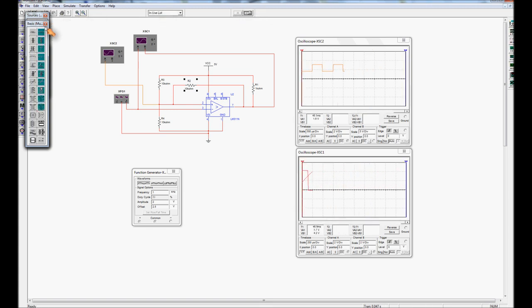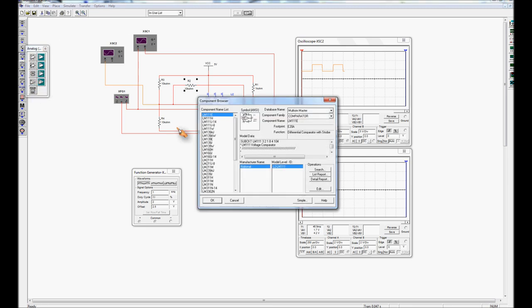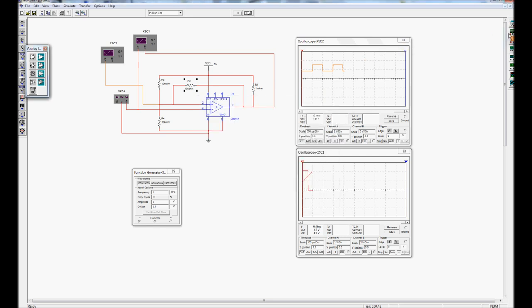Very quick. If you wanted to build this in multi-sim, components are all fairly easy to get. You go to the analog section here, comparator, and you can find the LM311 down there. Function generator can be found over here. Oscilloscopes can be found there. And power supply VCC and ground. And finally, your resistors. So it's all quite quick and simple to set up.